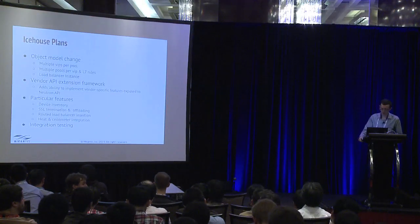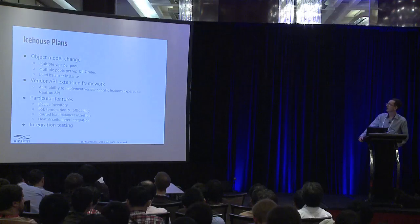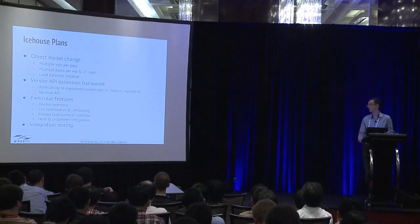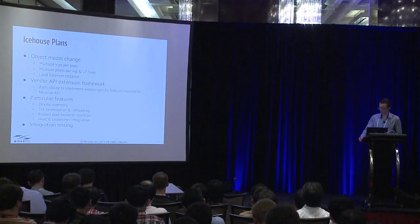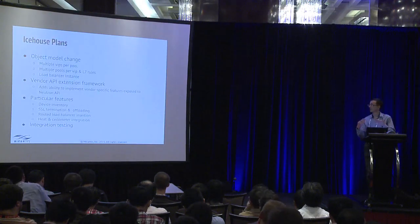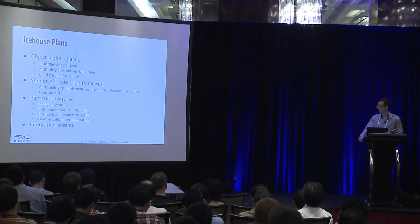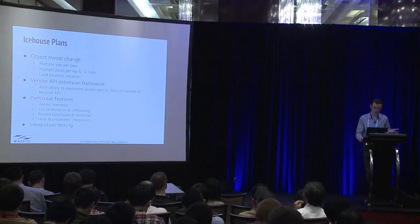The first two items represent a major data model change that gets rid of the one-to-one mapping between VIP and pool and changes it to many-to-many. You can have multiple VIPs per pool and multiple pools per VIP.